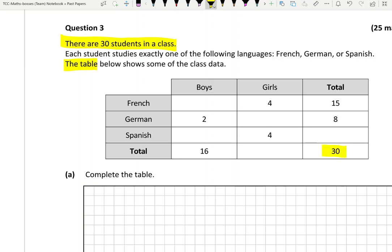Each student studies exactly one of the following languages, so they must study one because it's exactly one, and that makes the statistics very easy. That's called both mutually exclusive, meaning they can't study two subjects, and it's also exhaustive, meaning everybody studies a language.